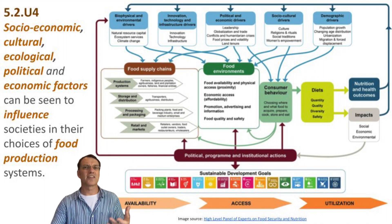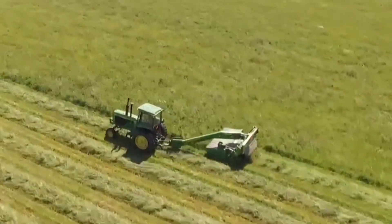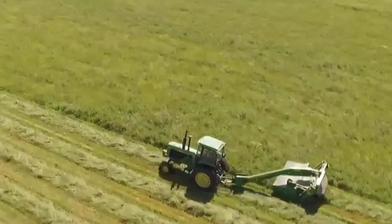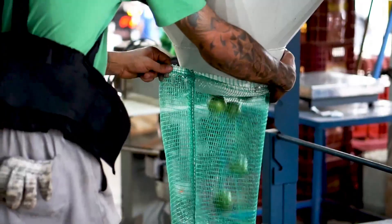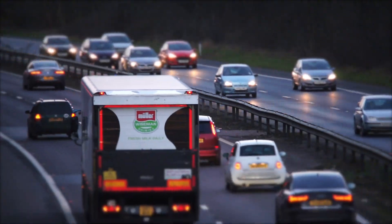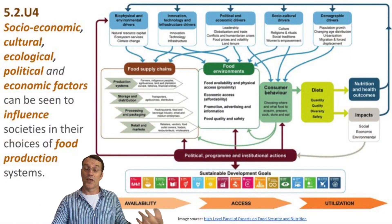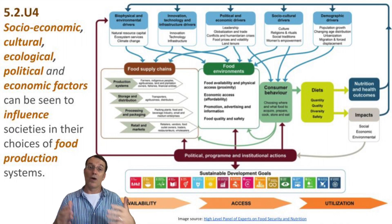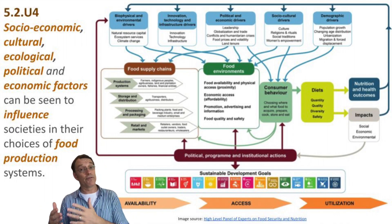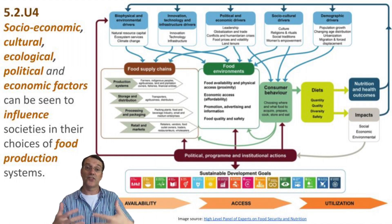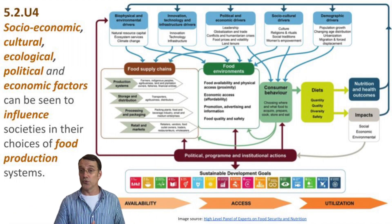The food system is like a complex machine with many different parts. It starts with producing food on farms and then involves processing, packaging, and transporting that food to markets. Along the way, a lot of different factors come into play. Climate change and weather events can affect crop yields, while economic policies might influence food prices. Understanding these connections helps us see how changes in one area can impact the whole system.